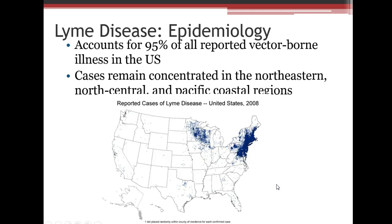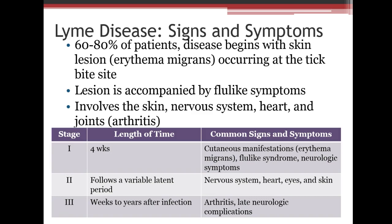Lyme's disease accounts for 95% of all reported tick-borne cases in the U.S. About 60–80% of patients have a skin lesion that brings them to the doctor. Symptoms include flu-like illness along with skin, nervous system, heart, and joint issues. Stage 1 lasts about four weeks with erythema migrans and flu-like symptoms. Stage 2 follows a variable latent period with nervous system, heart, eye, and skin issues. Arthritis can develop weeks to years after infection, and late neurological complications can also occur.